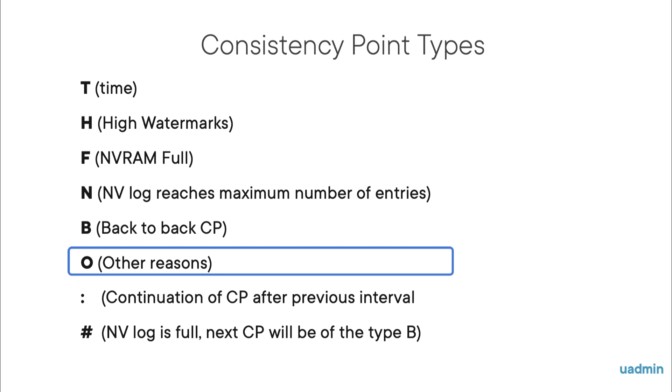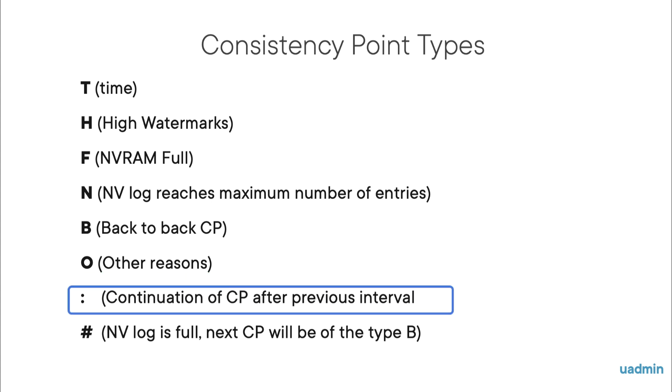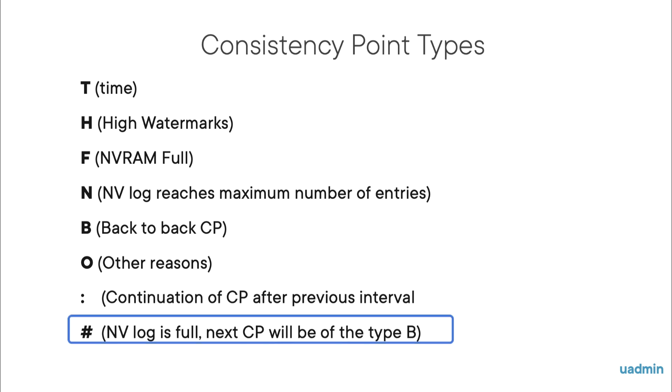There's a consistent snapshot. This means that there is another reason for a consistency point. For example, when a snapshot is taken. Just before the snapshot, a CP will have to be created to get a consistent snapshot. The colon says that a CP was started, and when we measure it again, the CP is not finished yet. And finally, when the NVlog is full, it says that the next measurement will show a B.